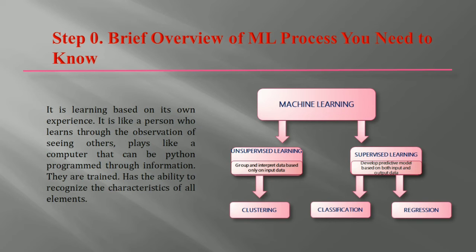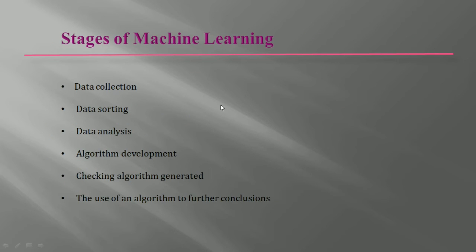A person who wants to learn from observations or from input data can go with the unsupervised approach, whereas based on input and output we can go with the supervised approach. This is the overview of the machine learning process. Now we can start with the coding of Python. These are the stages in machine learning where at each stage we will use Python — like to collect the data we can use Python code.